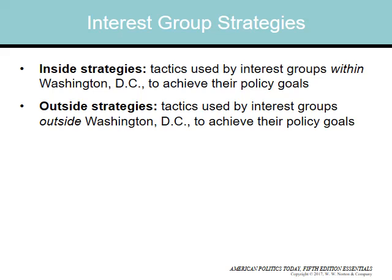There are two kinds of strategies: inside and outside strategies. Inside strategies are tactics used by interest groups within Washington D.C. to achieve their policy goals. Outside strategies are tactics used outside Washington D.C. An inside strategy would be going directly to a congressman or senator and lobbying in Washington. Outside strategies would be things like getting all your members together across the country and forming some kind of protest or group activity.